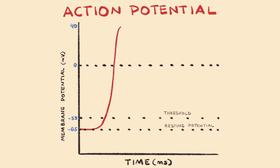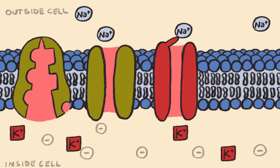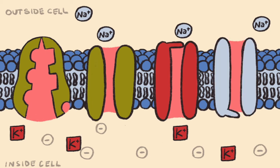At this peak, as voltage-gated sodium channels have become inactivated, voltage-gated potassium channels are now completely open. They were in the process of opening during the rising phase, but they are slow to open. So once these voltage-gated potassium channels are completely open and the voltage-gated sodium channels are inactivated, this will trigger the beginning of the falling phase.